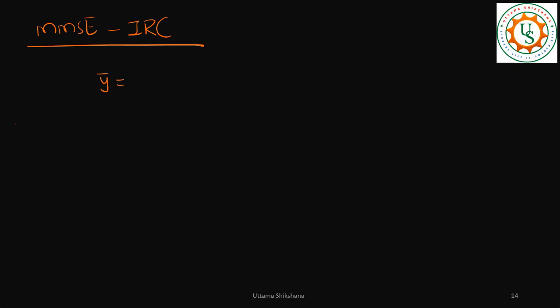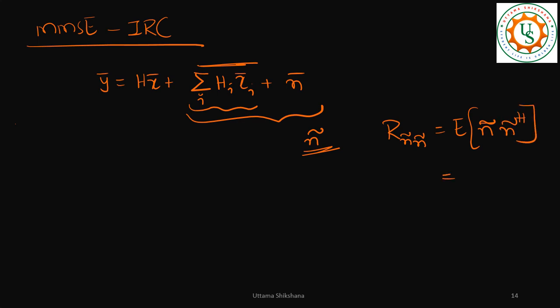In this, the model changes something like that. Earlier, my model was Y equals HX plus just N. Now, there can be interference. So this is the interference term. Together, we can model it as a noise for now. But definitely, this is not a simple noise. So my RNN tilde will be expectation of N tilde, N tilde Hermitian. This is not identity.